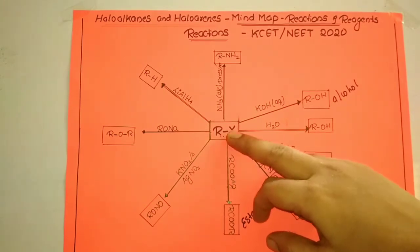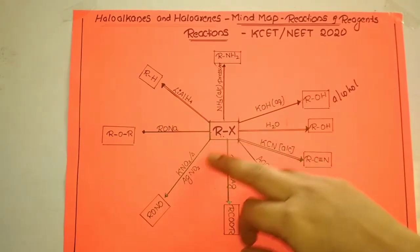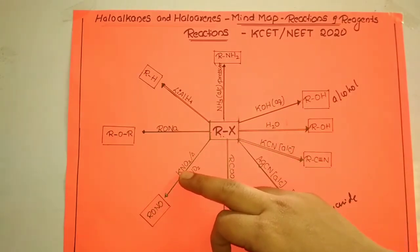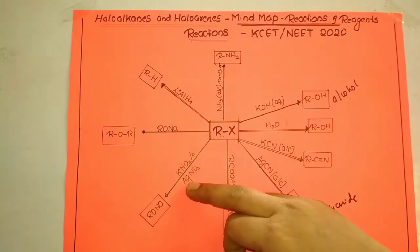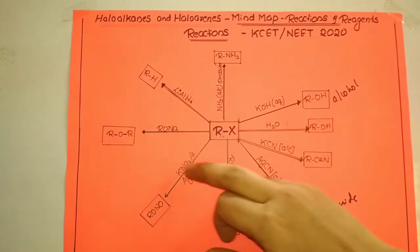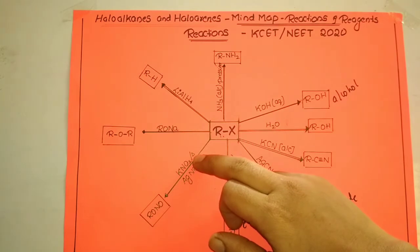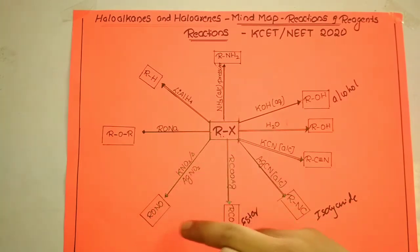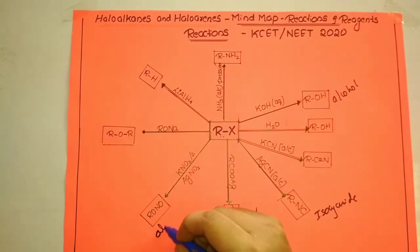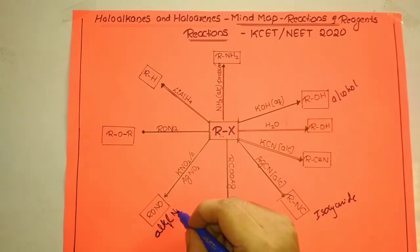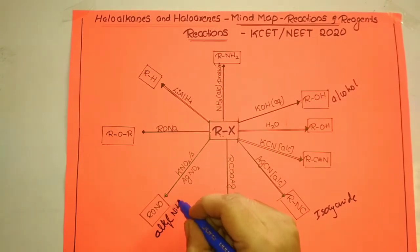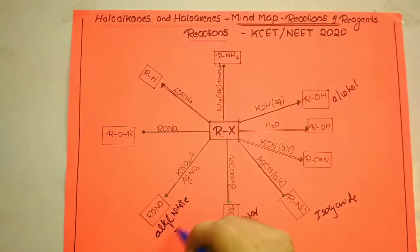When alkyl halide is treated with either potassium nitrate or silver nitrate and heated, it results in the formation of the respective alkyl nitrite. The product is alkyl nitrite.